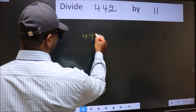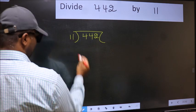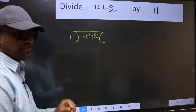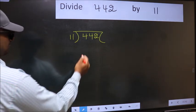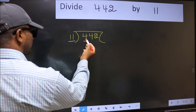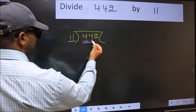442 and 11 here. This is your step 1. Next, here we have 4 and here 11. 4 is smaller than 11, so we should take two numbers, 44.